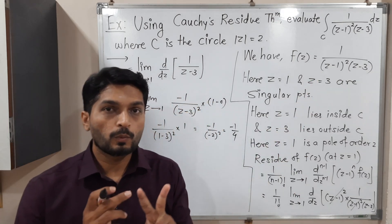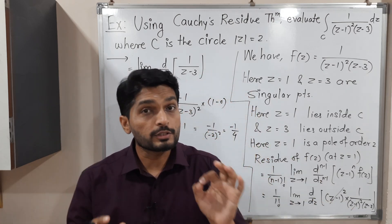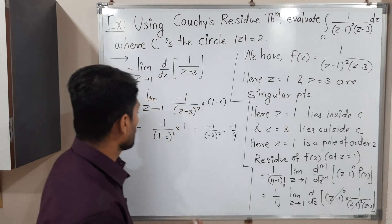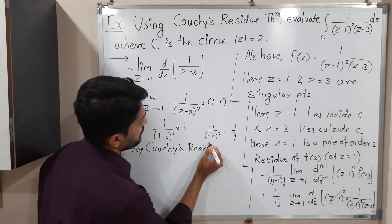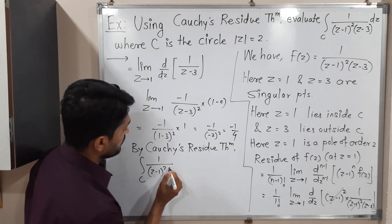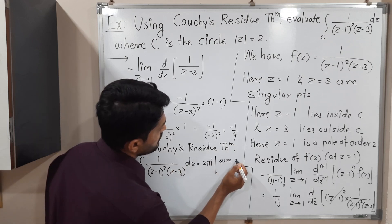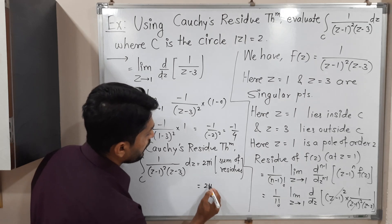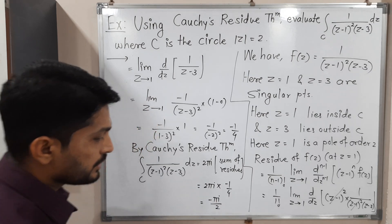The given function has only two singular points, 1 and 3. Z equals 3 lies outside the circle, so only Z equals 1 lies inside. The residue at Z equals 1 is minus 1 by 4. By Cauchy's residue theorem, the integral of 1 over (Z minus 1)²(Z minus 3) dZ equals 2πi times the sum of residues, which gives 2πi times (minus 1 over 4). The 2 cancels, giving the final answer: minus πi over 2.